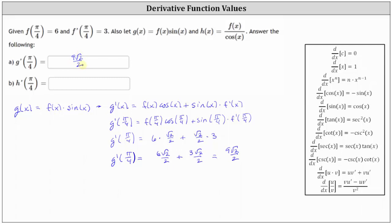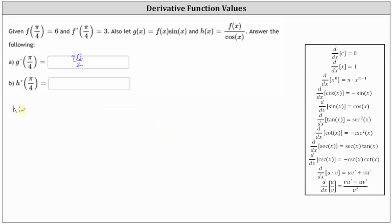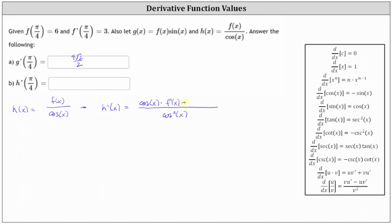Now we're going to determine h prime of pi divided by four. H of x is equal to f of x divided by cosine x. Because we have a quotient of two functions of x, we need to apply the quotient rule of differentiation to determine h prime of x. H prime of x is equal to, starting with the denominator, the original denominator squared, which gives us cosine squared x. In the numerator, we have cosine x times the derivative of the numerator, f prime of x, minus f of x times the derivative of the denominator, which is the derivative of cosine x, which is negative sine x.